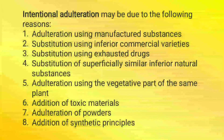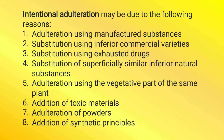Now moving to intentional adulteration. Intentional adulteration may occur due to the following reasons: First, adulteration using manufactured substances. Second, adulteration using inferior commercial varieties. Third, substitution using exhausted drugs. Fourth, substitution of superficially similar inferior natural substances. Fifth, adulteration using the vegetative part of the same plant. Sixth, addition of toxic materials. Seventh, adulteration of powders. And lastly, addition of synthetic principles.